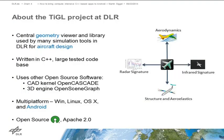Let me say a few words about the Teagle program we're developing at the German Aerospace Center. It's a central geometry library and viewer program used by many simulation tools for aircraft design and visualization. In the center you have the Teagle library. We have a parametric description of aircraft geometry, and the library creates and transfers that geometry to different tools — for example, to compute aerodynamics, the structural behavior, the coupling between aerodynamics and structure, or to compute the radar and infrared signature of the aircraft.